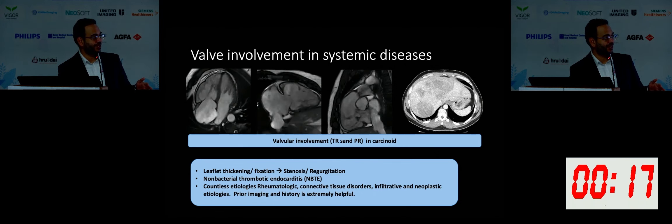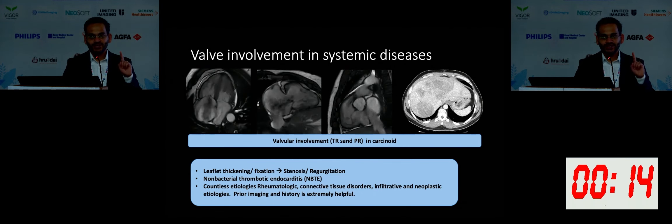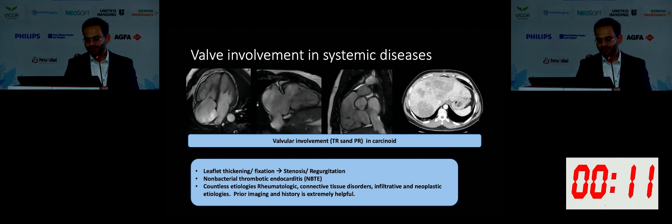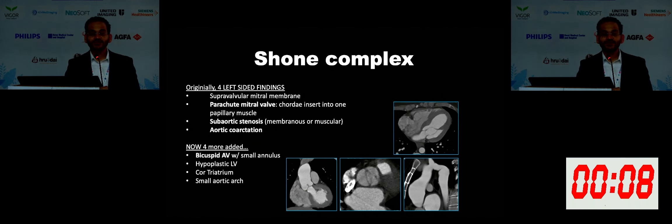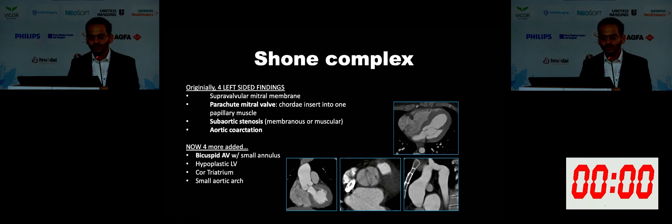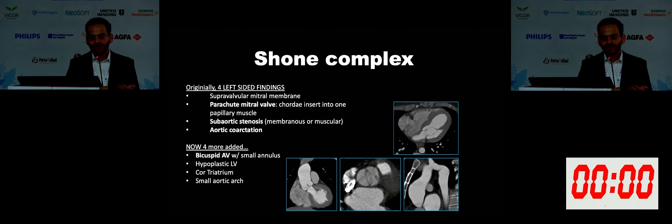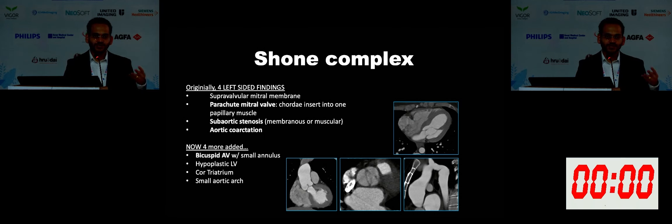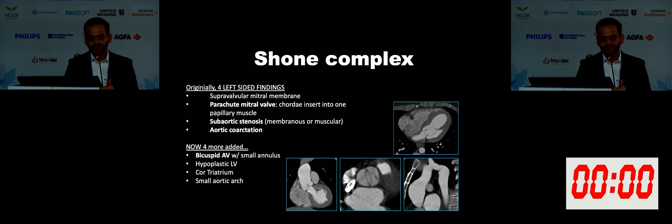I think I've shown most of the examples of valvular heart disease. I have one last case to show, and the diagnosis is beyond the valve, so you have to image with a larger Z-axis coverage. Here is an example of Shone's complex where you can see a parachute mitral valve with sub-aortic stenosis. You can have sub-aortic membranes and coarctation of the aorta. Recently we used to think that only four findings are associated with Shone's complex, but now we include bicuspid aortic valve, hypoplastic left ventricle, cor triatriatum, and small aortic arch along with Shone's complex.